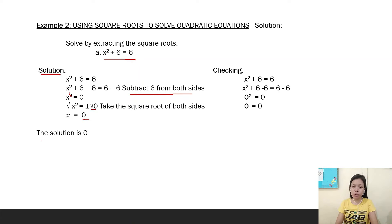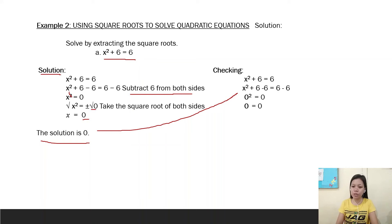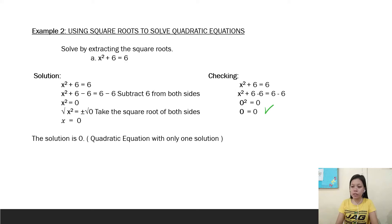We check if it is correct. x squared plus 6 is equal to 6. Substituting x equals 0: 0 squared plus 6 equals 0 plus 6, which equals 6. So 6 equals 6, and the solution is 0 — it is correct.